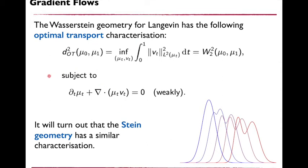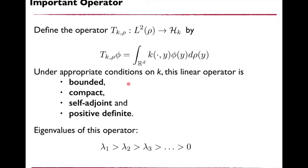In the Langevin case we work with Wasserstein geometry, defined via the Benamou-Brenier formulation: the distance between two measures mu_0 and mu_1 is the minimum L2 norm over all time-dependent vector fields that transport the mass from mu_0 to mu_1. The Stein geometry and Stein distance have a similar characterization. Over the next few slides I will briefly describe how they mimic each other and what parallels we can draw between them.